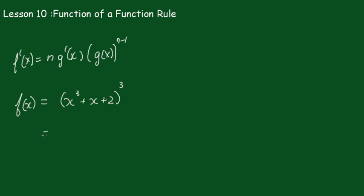The advantage of this technique is you can just write the answer straight down. The 3 comes down to the front, and you differentiate what's inside the brackets. You need to be careful because you've got two terms, giving 3x² + 1 — you'll need a bracket there. Then rewrite (x³ + x + 2) and reduce the power by 1 to get 2. The whole thing is fully factorized, which is very clean. If you expanded it all out first and then differentiated each term, you'd end up with an unfactorized expression, which is quite ugly. This is all done in one go — a very powerful rule, the function of a function rule.